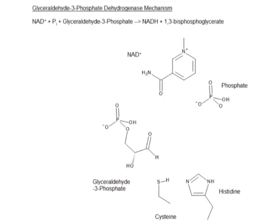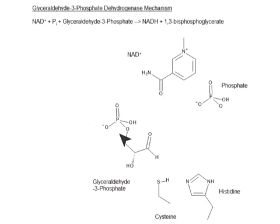To start, we have the enzyme active site where we have a cysteine, a histidine, NAD as a substrate, phosphate as a substrate, as well as our GAP — our G3P — glyceraldehyde-3-phosphate.